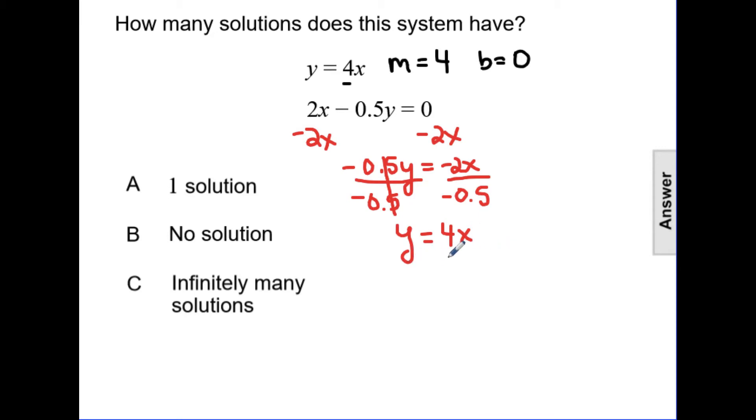Now that the y is by itself, we can see the coefficient of x is 4, and there's no constant, so the y-intercept is 0. Comparing the two, we can see that the slope of 4 and the y-intercept of 0 is the same for both equations, which means both equations are going to graph the same line.